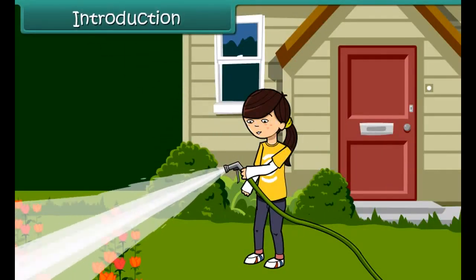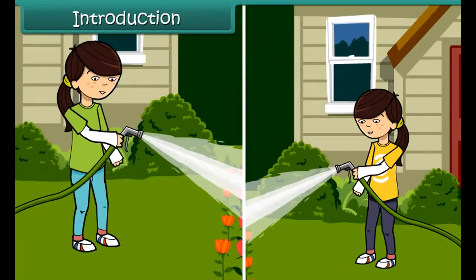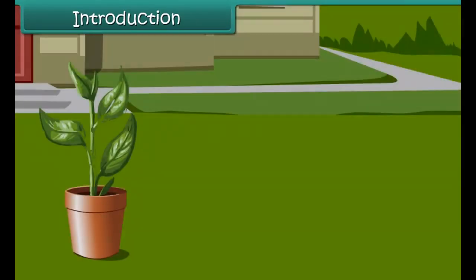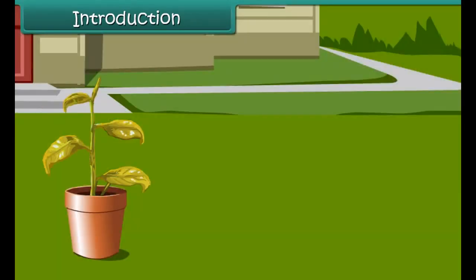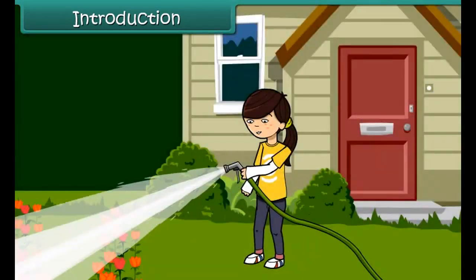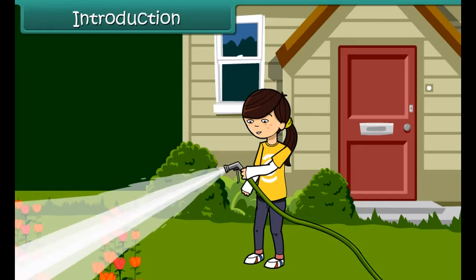Tanu waters the plants in her garden every day. She knows that if she does not do so, they will wilt and ultimately die. But she is curious to know how the water that she supplies to the roots reaches the leaves of the plants.